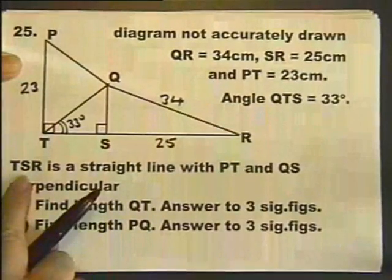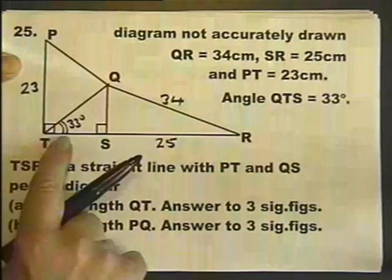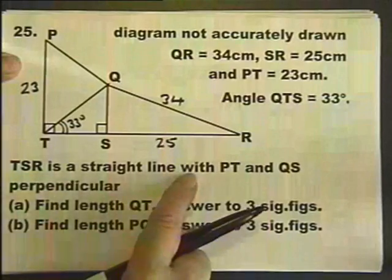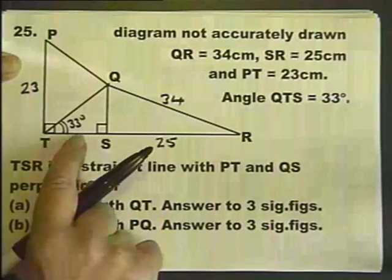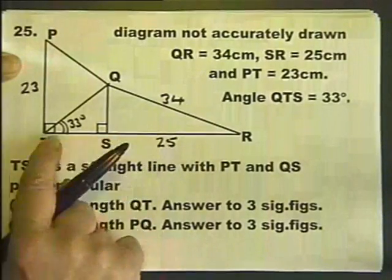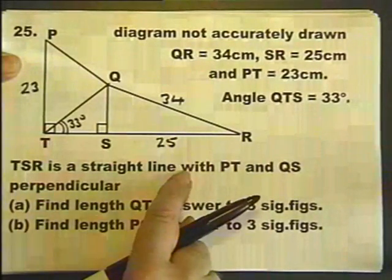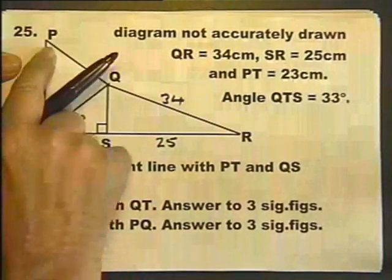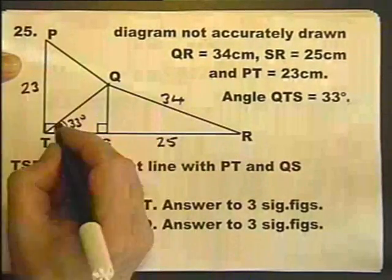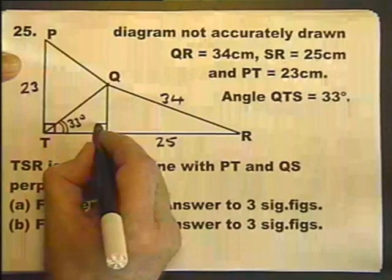So that's the data. We are also told that TSR is a straight line. It's very important. You may think it looks like a straight line, but it might be 179.9 degrees there. It's only a straight line because you are told that it is, with PT and QS perpendicular. So, we are told that these are right angles.